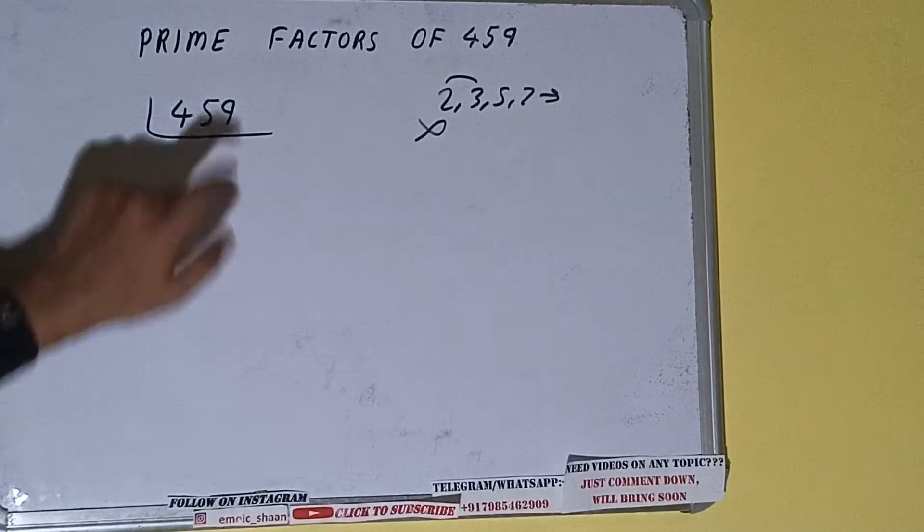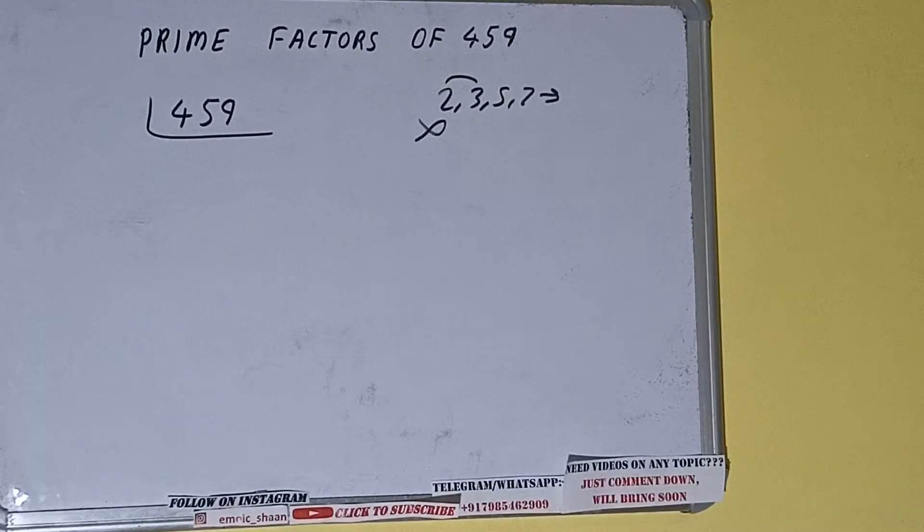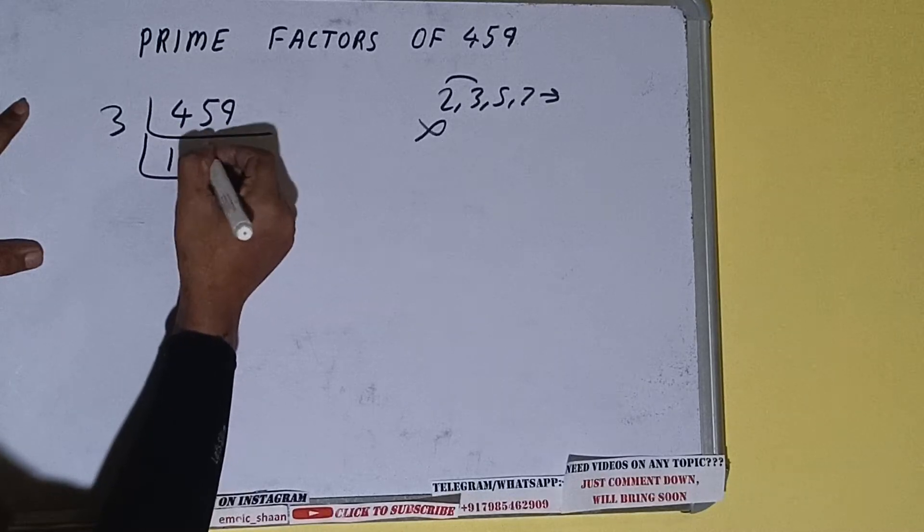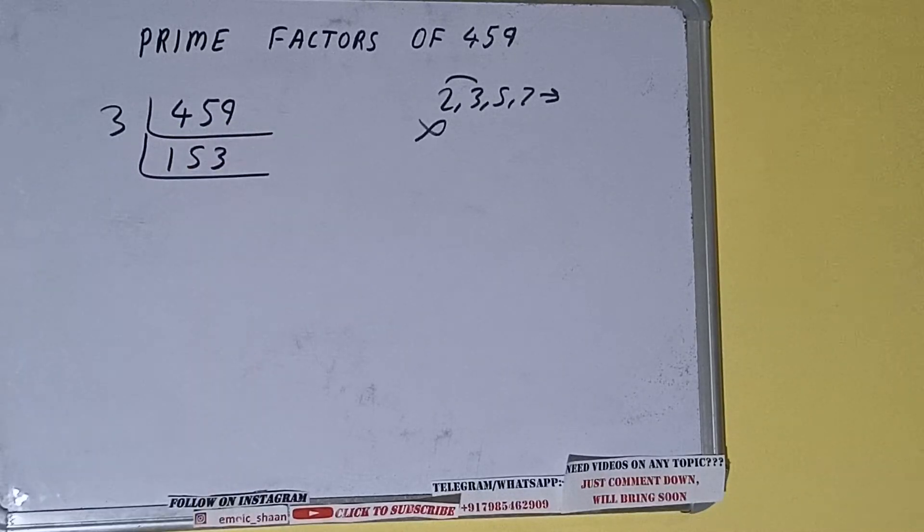3 times 1 is 3, 3 times 5 is 15, 3 times 9, yes it is divisible by 3. So divide it: 3 times 1 is 3, 3 times 15 is 3 times 9. We'll be having 153.